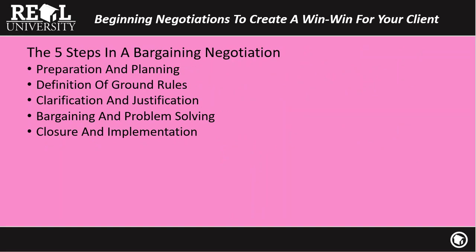When you think about negotiating, you have to realize that there are steps. It is a process of events. We have to think about: is there some planning on what we're going to negotiate or how we're going to do it? Are there any ground rules? In the real estate world, the ground rules are kind of set for us because we have ethical rules we have to play by. Then we have justification of our offer — where it comes from, why we're choosing that — then problem-solving back and forth, and then closure.